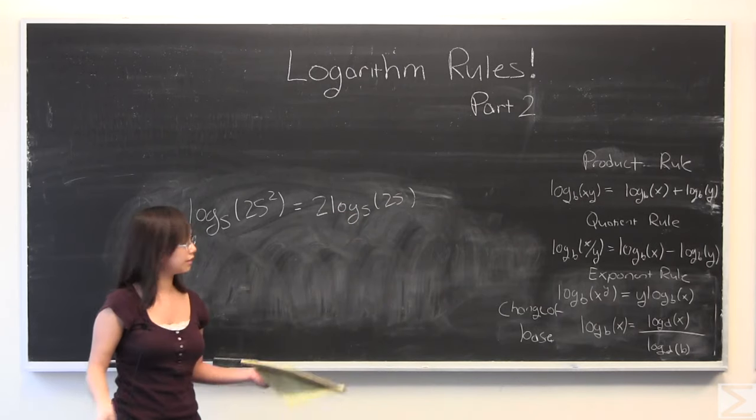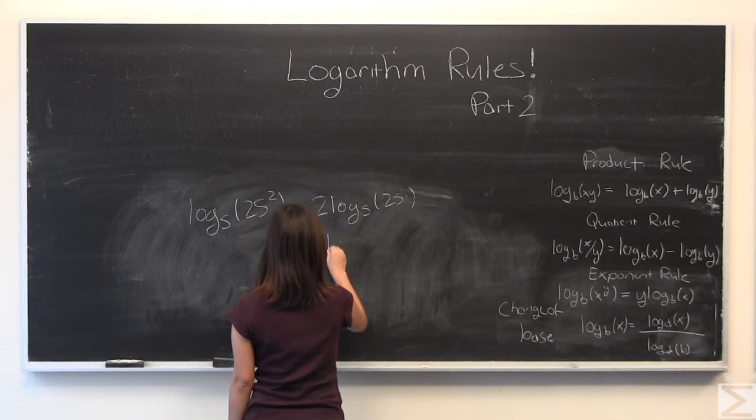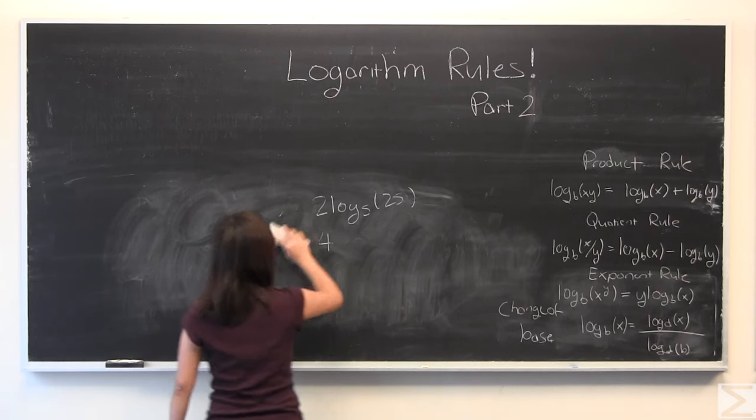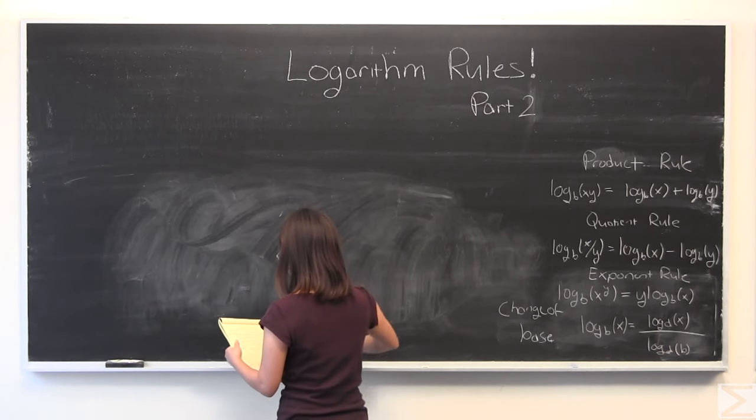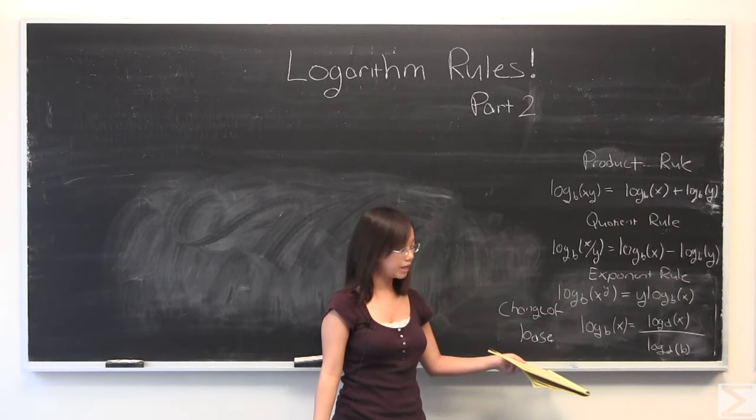Log base 5 of 25 is 2, because 5 to the power of 2 is 25. 2 times 2 is 4. And so you've solved this pretty easily. OK, next we have the change of base.